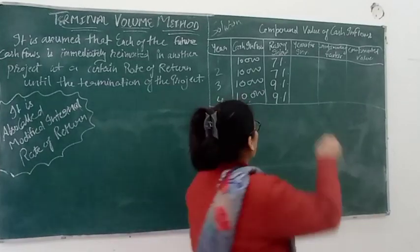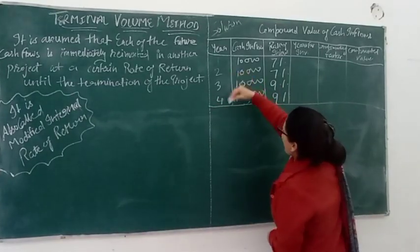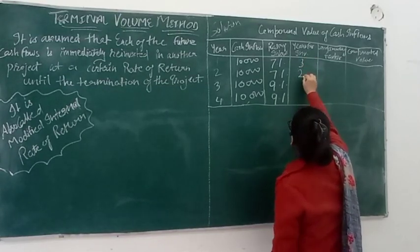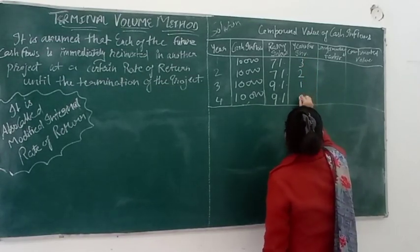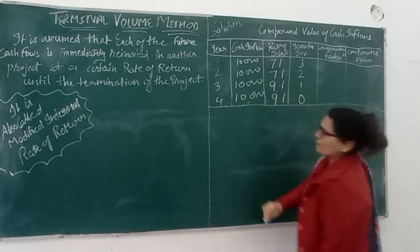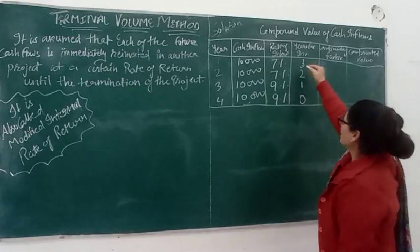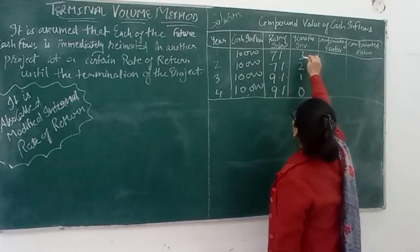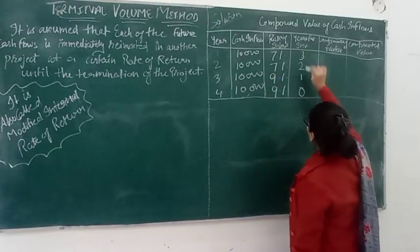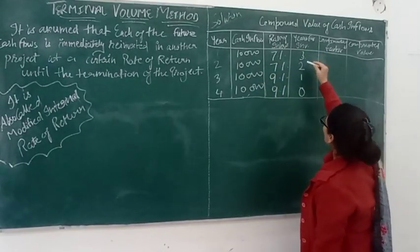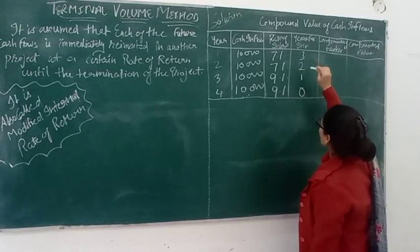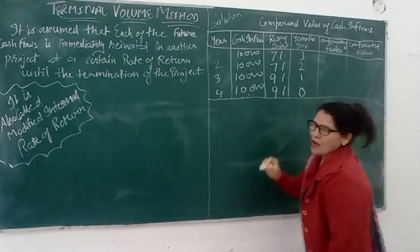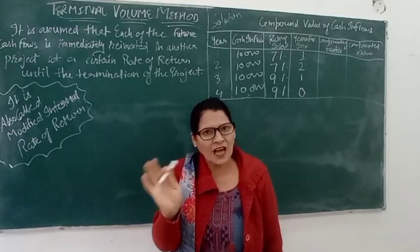Now, the total project life is 4 years. The first cash inflow received at end of year 1 is reinvested for 3 years, the second for 2 years, the third for 1 year, and the last cash inflow at the end of year 4 has 0 years remaining — so it is not compounded further. This is how we compound the cash inflows forward.